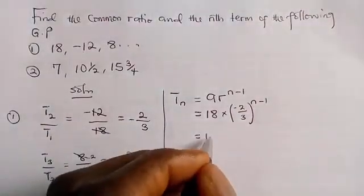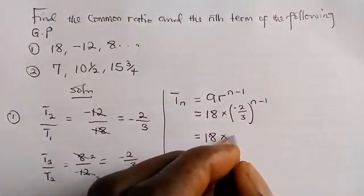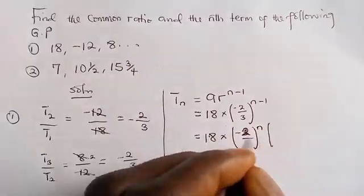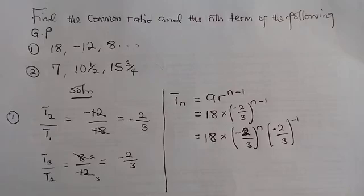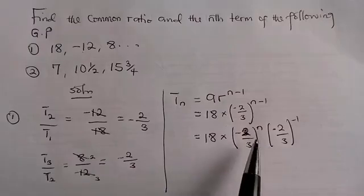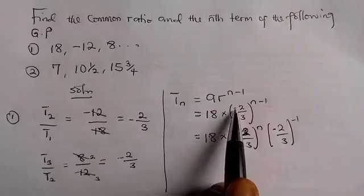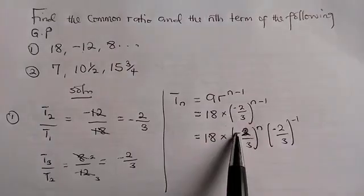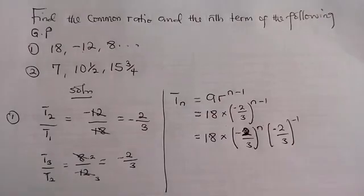We are going to have 18 multiplied by, using our laws of indices, minus 2 over 3 raised to the power of n minus 1. We can express this as minus 2 over 3 raised to the power of n, multiplied by minus 2 over 3 raised to the power of minus 1. According to the multiplication law of indices, when you have the same base, you add their powers — so n plus minus 1 equals n minus 1.